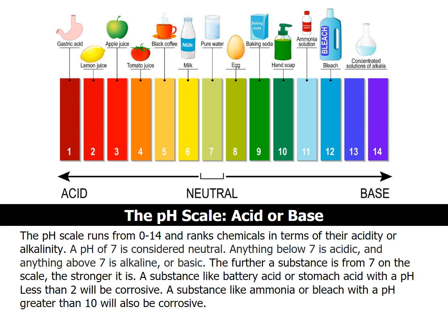A substance like battery acid or stomach acid with a pH less than 2 will be corrosive. A substance like ammonia or bleach with a pH greater than 10 will also be corrosive.